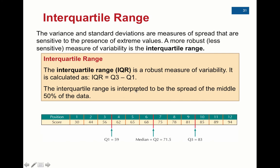Here's an example with 12 data values. The median is in the middle. Quartile 1 is the median of the first half, and Quartile 3 is the median of the second half. The interquartile range here would be 83 minus 59, which is 24.